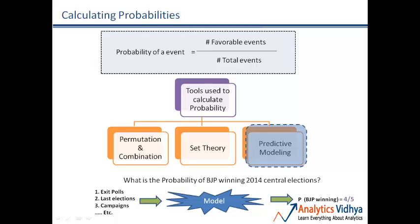For predictive modeling, you have a set of inputs that help the model identify the right probability for the event to happen. Here the inputs are exit polls, last election results, campaign budget, etc. These inputs will tell the model whether the probability is inclined towards BJP winning or against it. In this case, say the model gives a number of four by five for BJP winning — so using a predictive model you will always end up with a probability indicating the likelihood of the event.